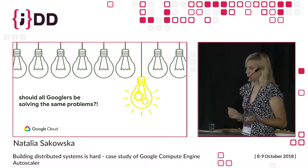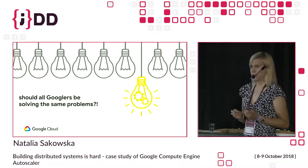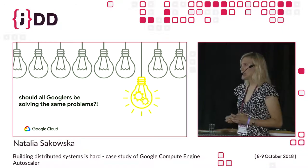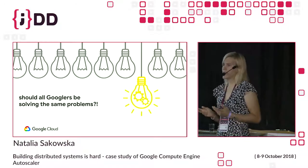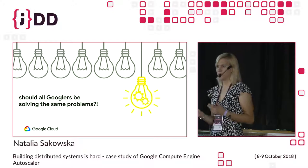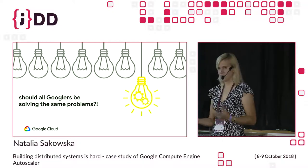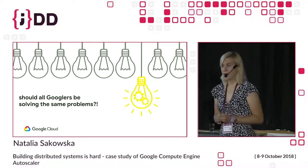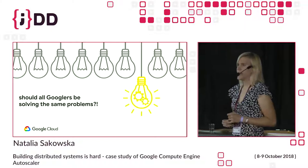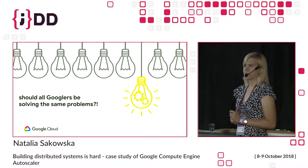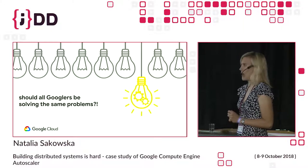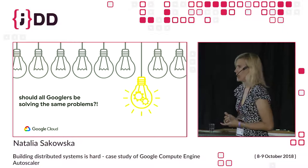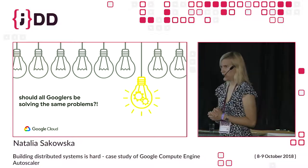Borg uses different scheduling policies and priorities. It treats differently a service that has great adoption, is externally visible, and needs low latency versus a test batch job being run by an engineer.